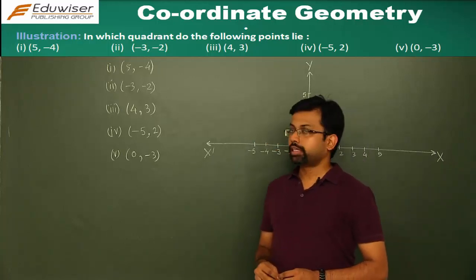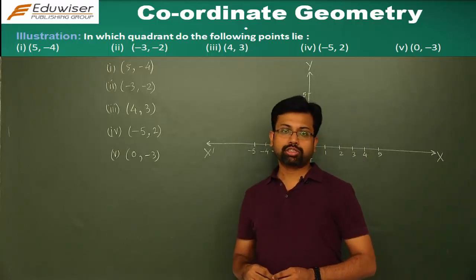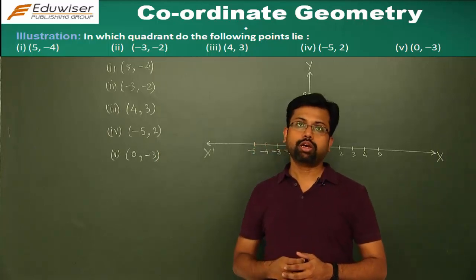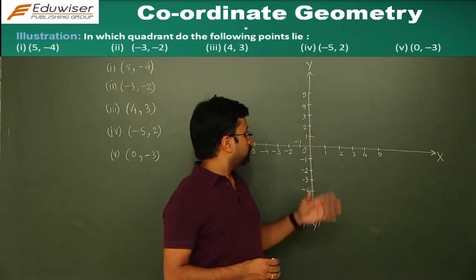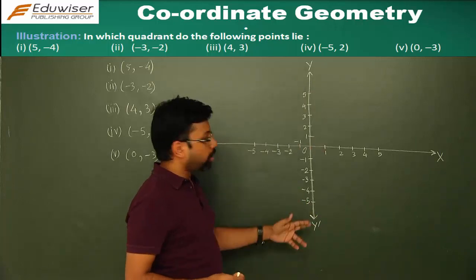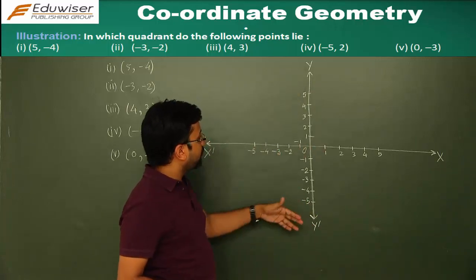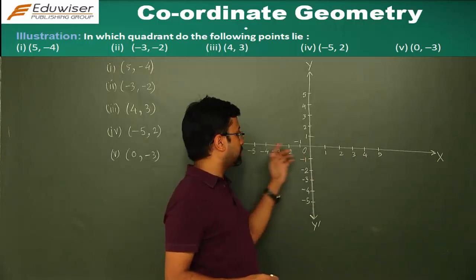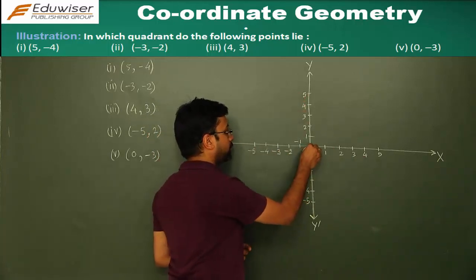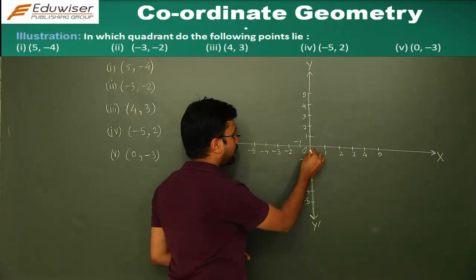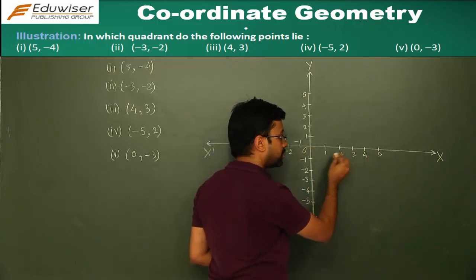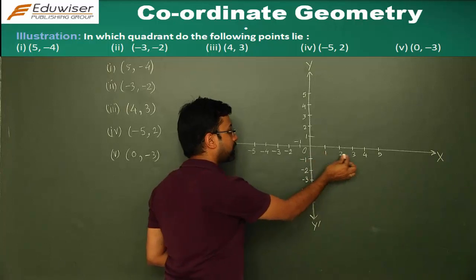The first question asks us to point out in which of the coordinates the following points would lie. For doing that we need to draw the rectangular coordinate system. You have the y-axis here, y-o-y-dash and x-o-x-dash. These are perpendicular lines. The point of intersection is the origin, and on both sides of the origin you start marking out points at equal distance and giving them numbers.